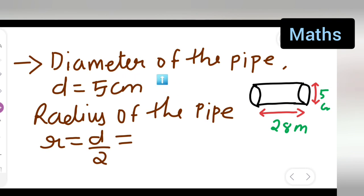Diameter of the pipe is 5 centimeter. Radius of the pipe will be half of the diameter. So radius = d/2 = 5/2 centimeter.